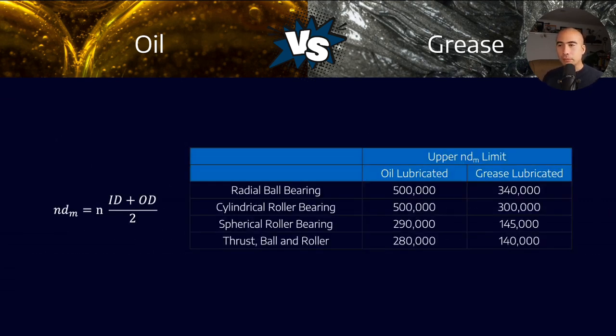There are rules of thumb using the DN or NDM number, where we take N times the average diameter for different bearing types. We have an upper limit depending on the bearing type. This is a rule of thumb - if you have any questions, consult your OEM.